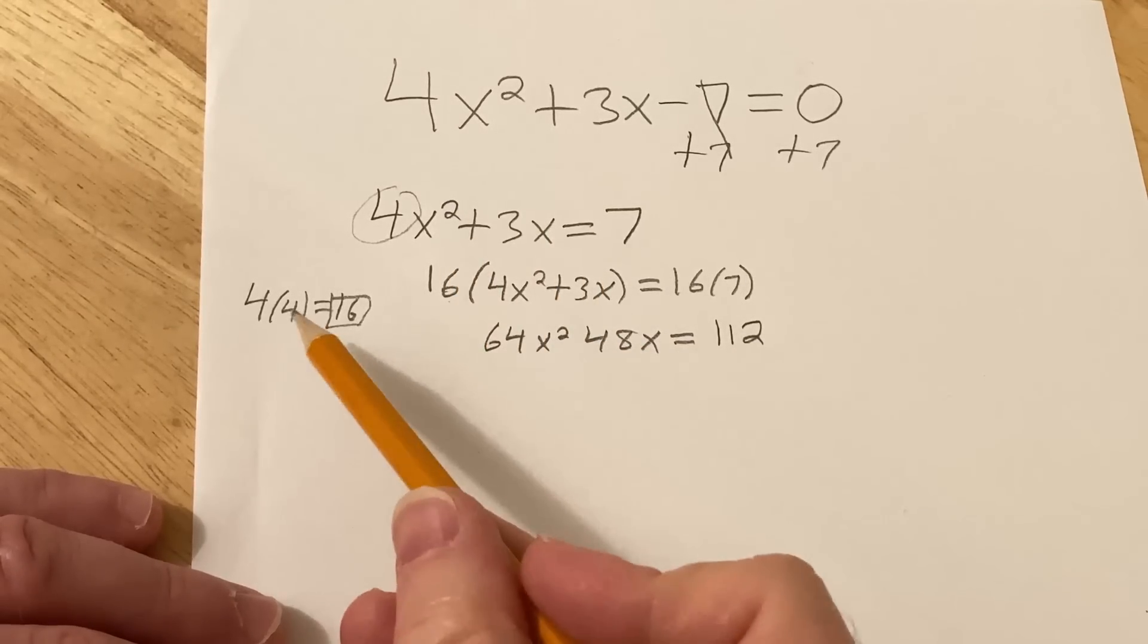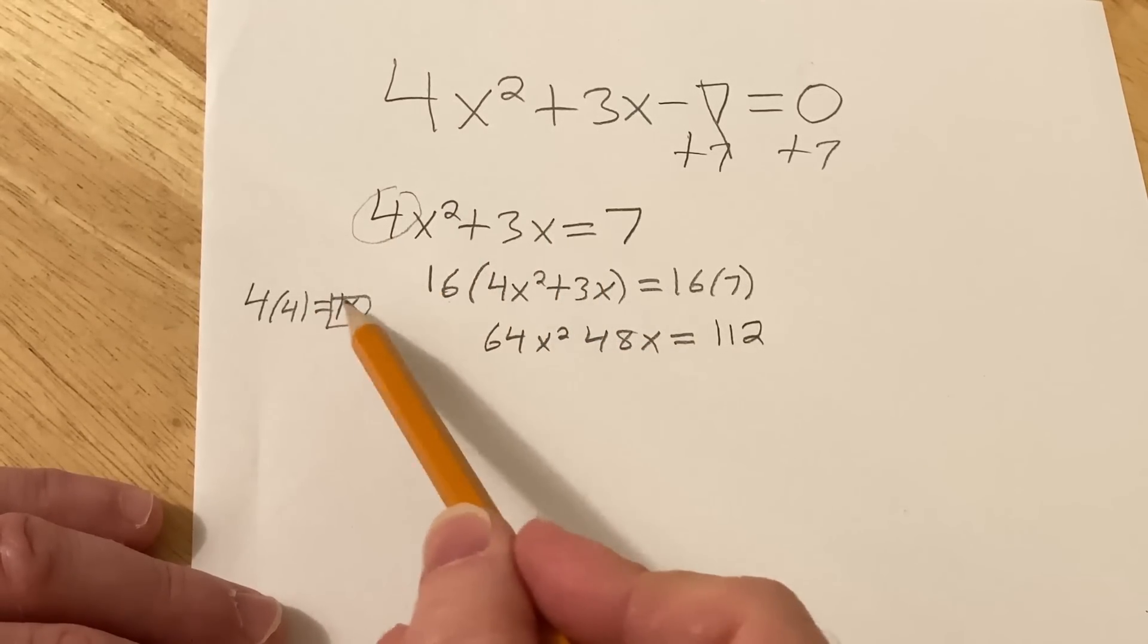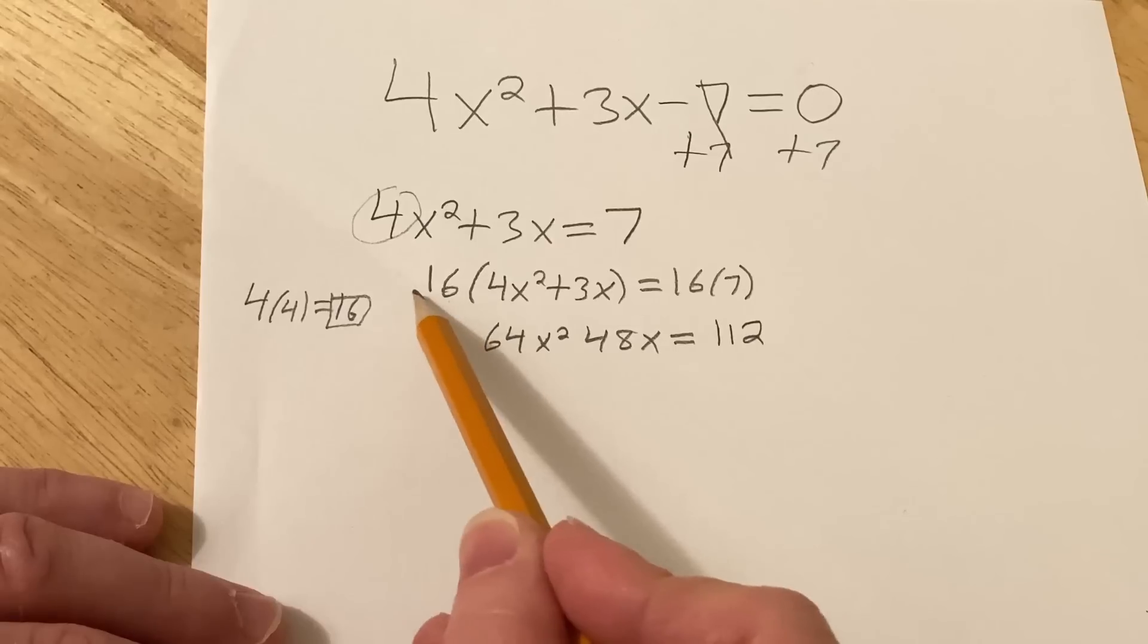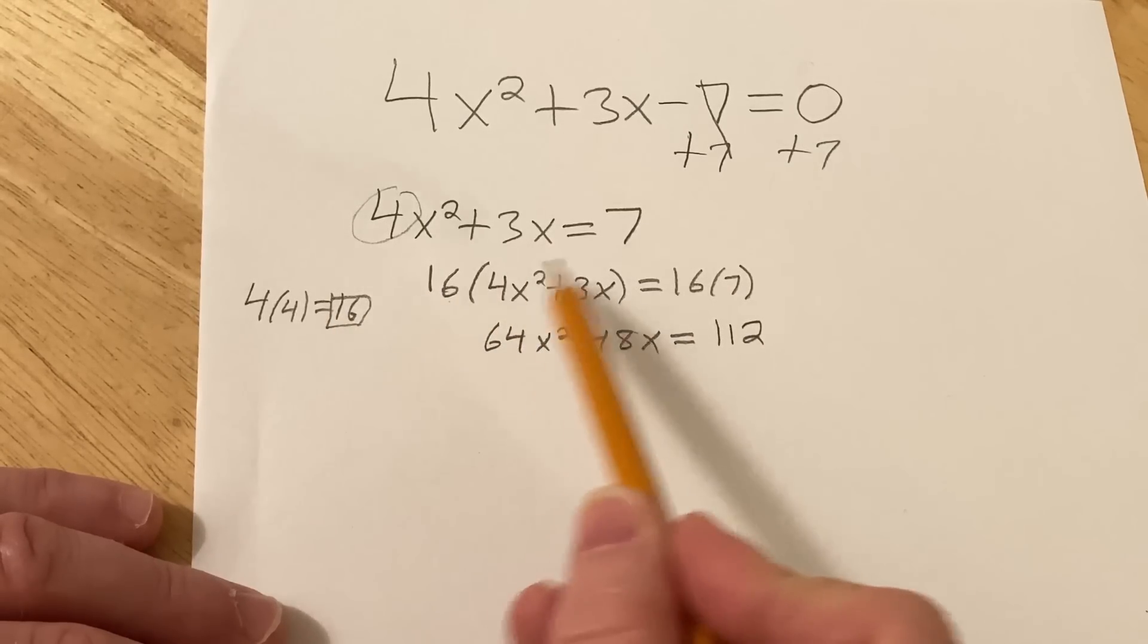So again, step 1, you take this number here and you multiply it by 4. And then you basically multiply your entire equation by that number. So both sides.